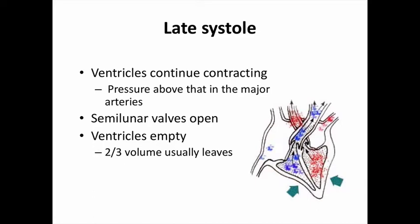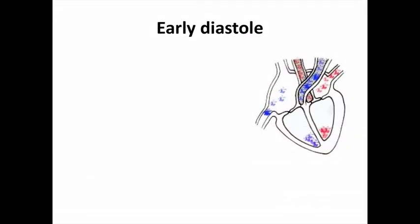Not all blood leaves during ventricular contraction — about two-thirds is ejected. The remaining one-third stays in the ventricle, and that amount can vary depending on different disease states.